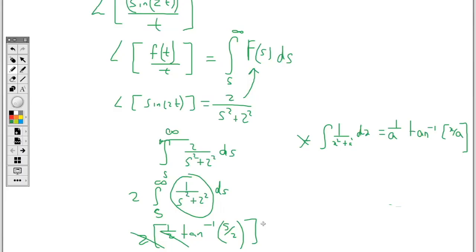Now these cancel, so this will be gone. So what I'm left with is tan inverse of s over 2, and I have my boundary which is infinity and s. So substituting the boundary, you're gonna have the upper limit first and then the lower limit. So we will have the tan inverse of infinity over 2 minus the tan inverse of s over 2.